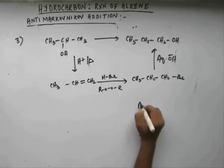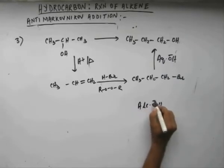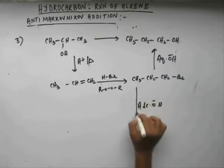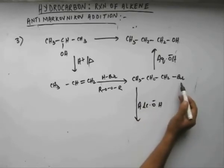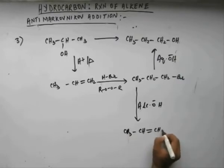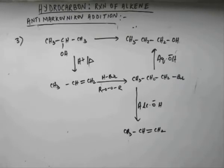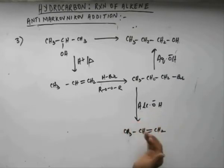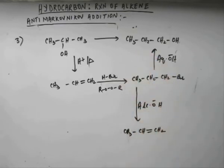Alcoholic OH⁻ is a base. If you added alcoholic OH⁻ on 1-bromopropane, it would carry out elimination instead. This we have seen at great length when we studied nucleophilicity versus basicity — go and see that lecture if you haven't. Aqueous OH⁻ is a nucleophile and shows substitution; alcoholic OH⁻ is a base and shows elimination.